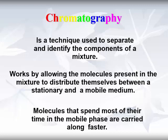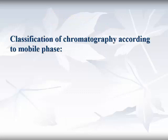There are two types of chromatography: analytical chromatography and preparative chromatography. Analytical chromatography is used to determine the existence and concentration of a specific compound in a sample. Preparative chromatography is used to purify sufficient quantities of a specific compound for further use.